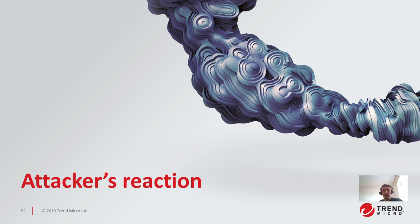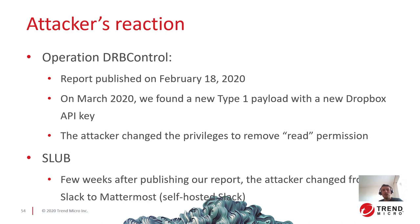After publishing our research, what was the attacker's reaction? In the case of Operation DRB Control — we published the report on February 18th — in March we found that the Type 1 payload had a new API key, and the attacker also changed the privileges to remove read permission, so we could no longer read the content of the directory. For SLAB, a few weeks after publishing our report, the attacker changed from Slack to Mattermost, which is a similar but self-hosted Slack alternative, so they had no more problem with Slack tokens being disabled.